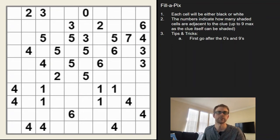So the first thing I do is I look for zeros and nines, obviously those are the easiest. Here we have a zero. We know all the cells adjacent to it are going to be unshaded, so we can X those out. We don't have any nines, that's okay.